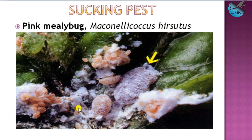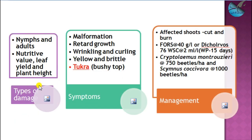It is the most important pest under this category. The eggs and nymphs emerging from them are the immature stage, and the matured adults usually have a mealy coat over them, which makes it hard to control this pest. The nymphs and adults do the major part of the damage by sucking the sap, which decreases the nutritive value of the leaf, and the leaf yield and plant height also decrease.